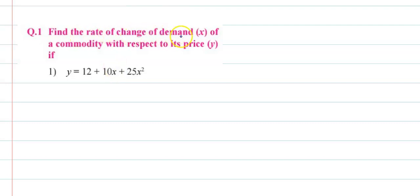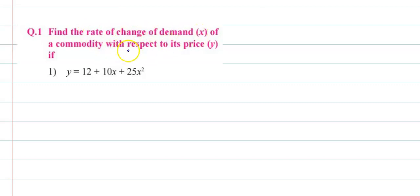Find the rate of change of demand (x) of a commodity with respect to its price (y), if y is equal to 12 plus 10x plus 25x squared. So we have to find the derivative of x with respect to y.